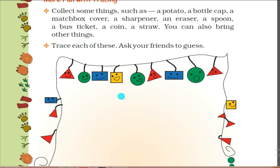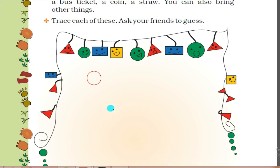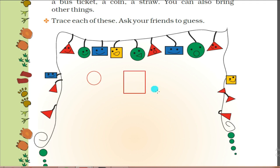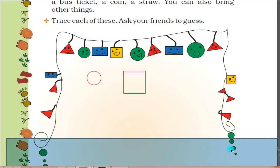This shape will come after tracing the coin - which shape is this? This is a circle. If I have traced a matchbox, this shape will come - which shape is this? This is a rectangular shape, a rectangle.